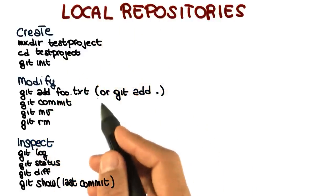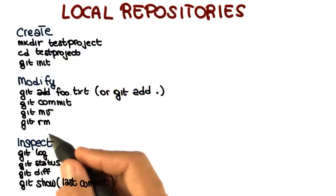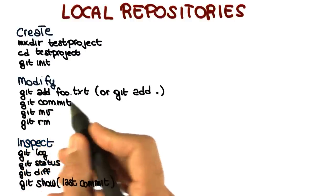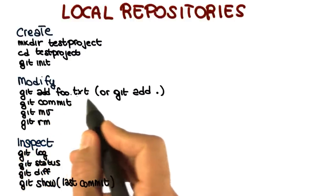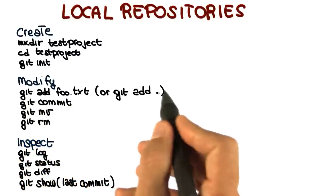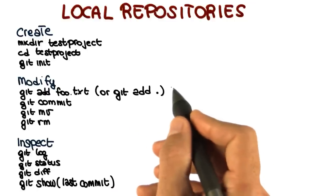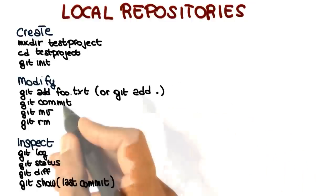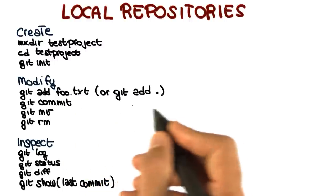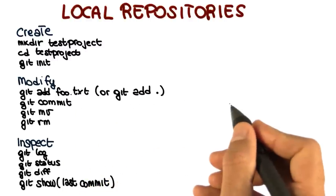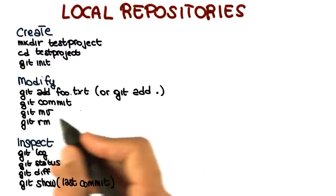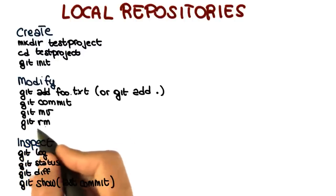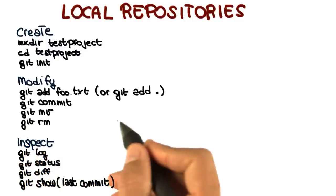The second category includes commands that we will use to modify the content of the repository. We saw that we can use git add to add a specific file or a complete directory to our index, so to the list of files that will be committed, that will be considered in the next commit. Then we can use commit to actually commit the changes that we made to those files to our local repository. And we can also use git move and git rm or git remove to move files around and to remove files.